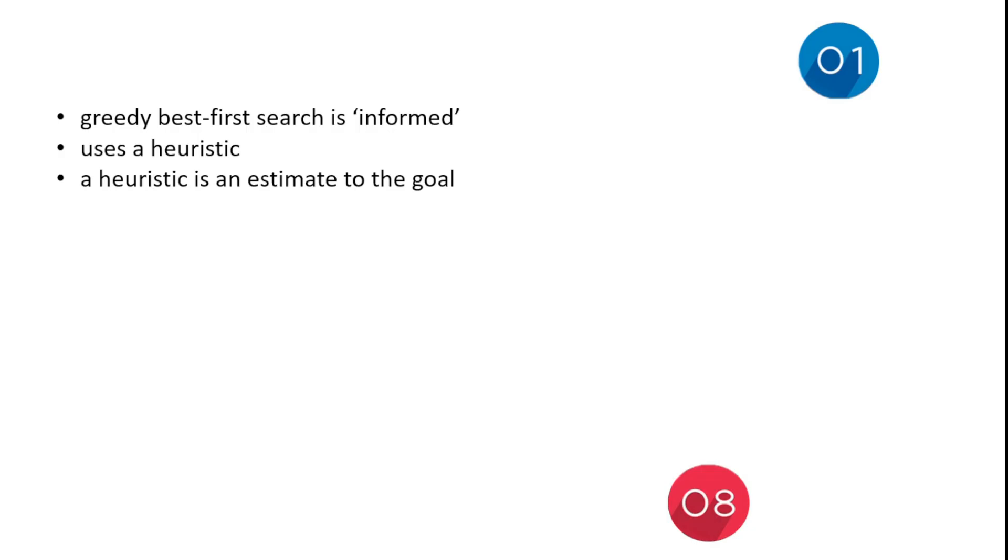Let's look at the greedy best-first search example. So we know it's informed—it uses a heuristic, which is the estimate to the goal. So let's have a look: we go through node 2 has an estimate of 7, node 9 has an estimate of 11, and node 10 has an estimate of 15.